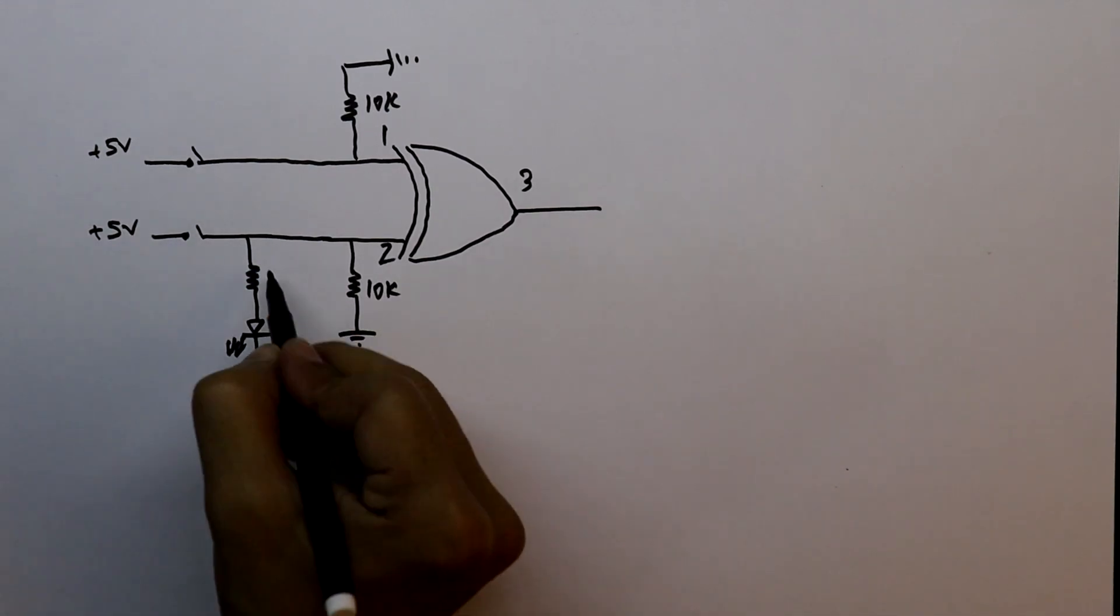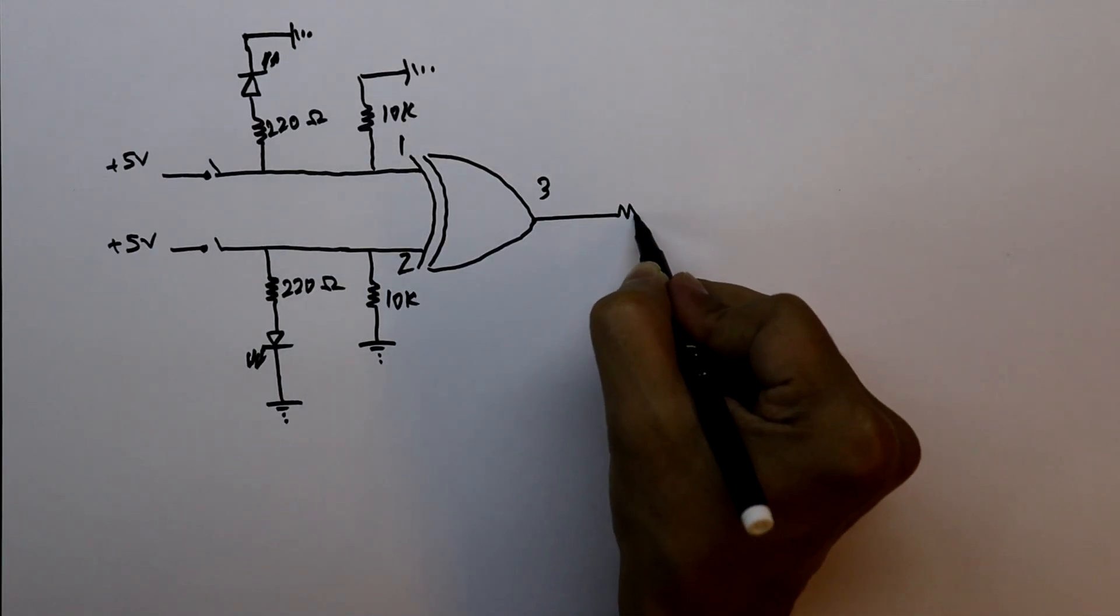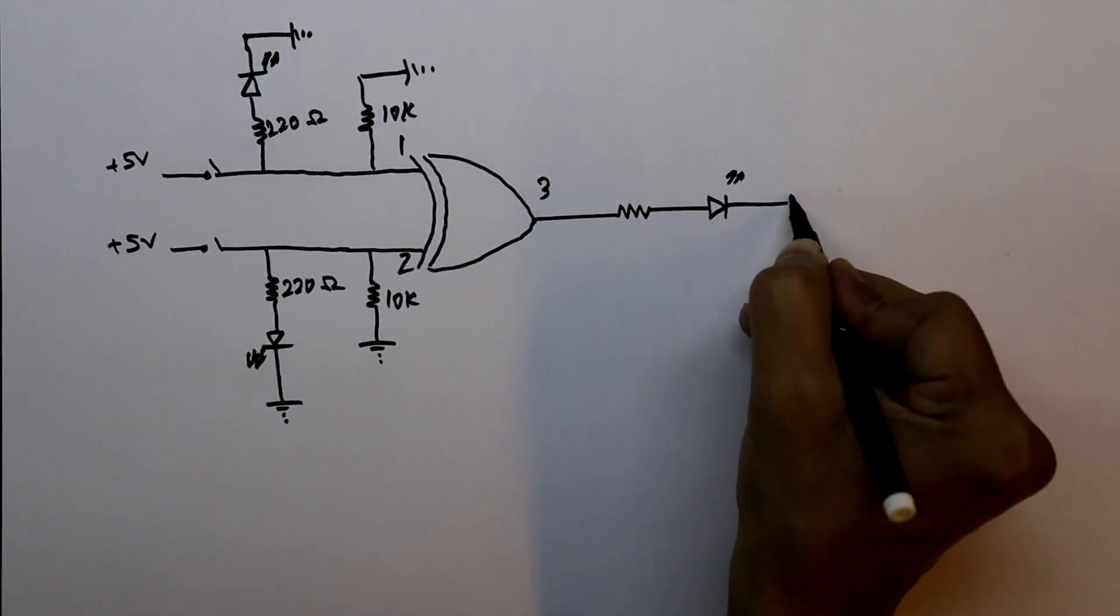And to see the input, we have to connect LEDs. The value of series resistor is 220 ohms. And to see the output, we will connect LED.